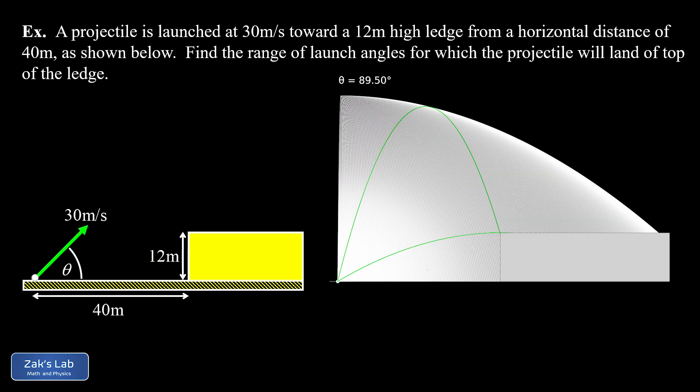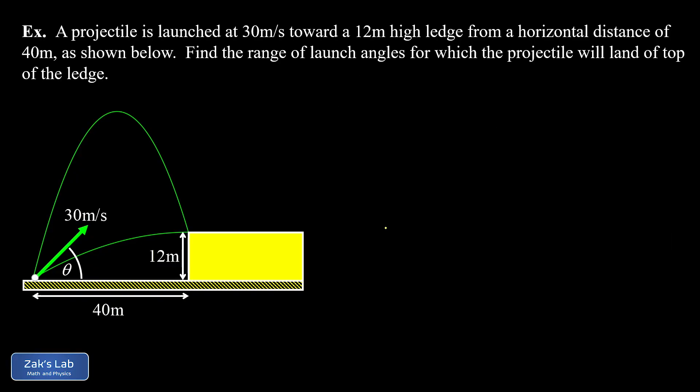Being able to see that there's a minimum and maximum angle that puts you right at that upper left corner. And those are going to be the bounds of this range that we're trying to find to solve the problem. There's those two special trajectories drawn into the slide now, and now we're able to start doing some physics.